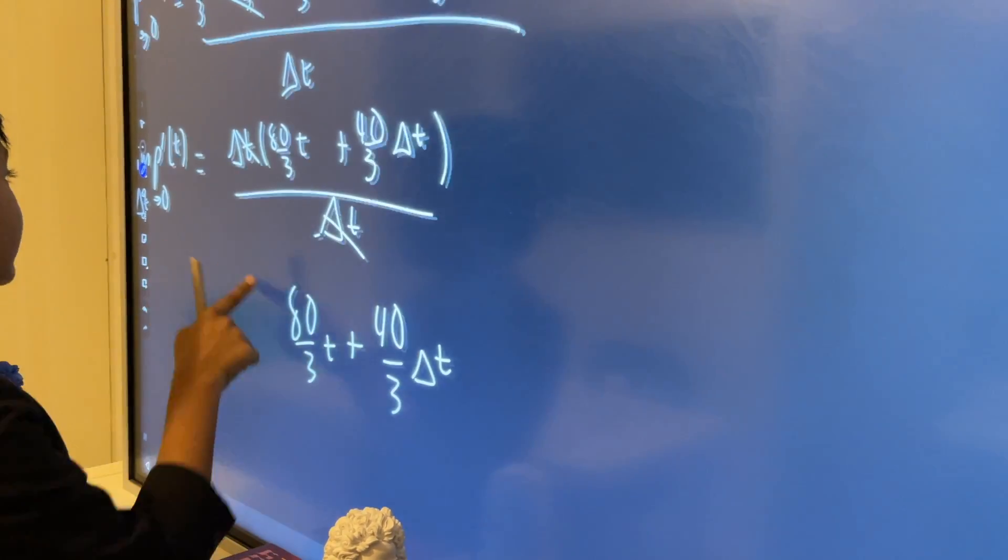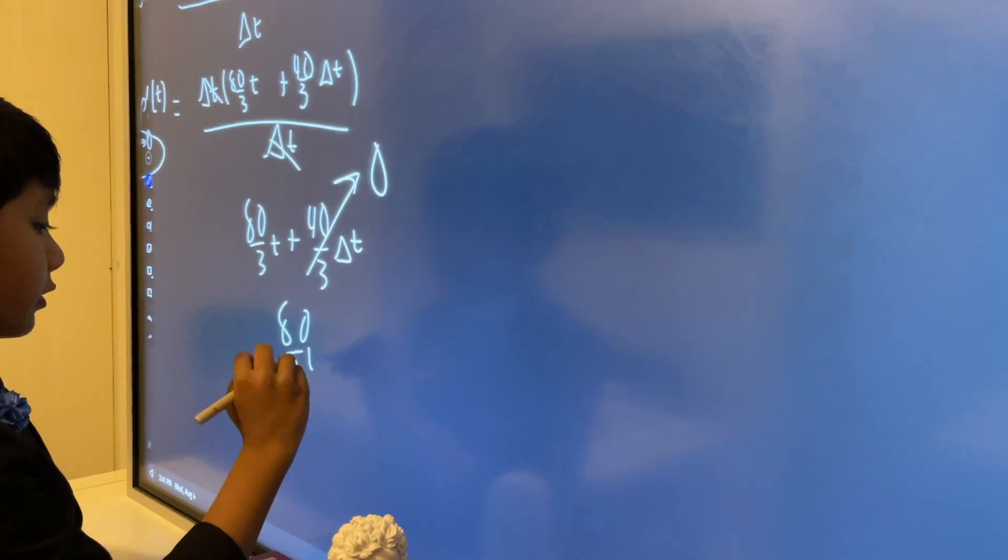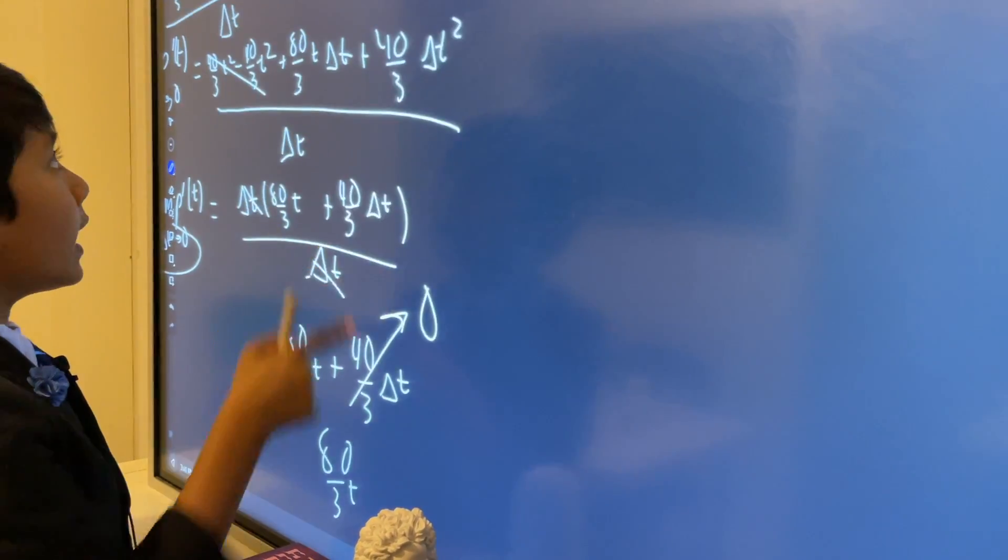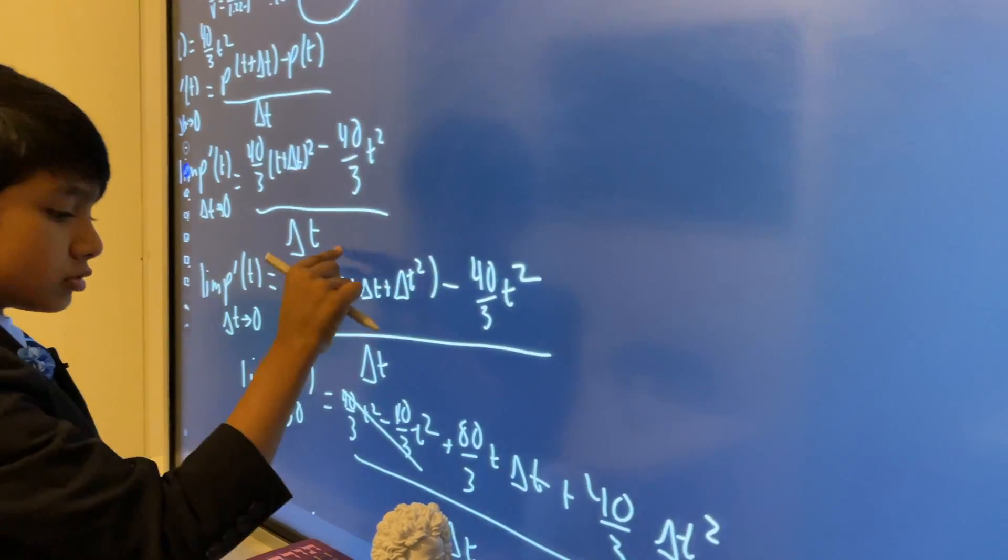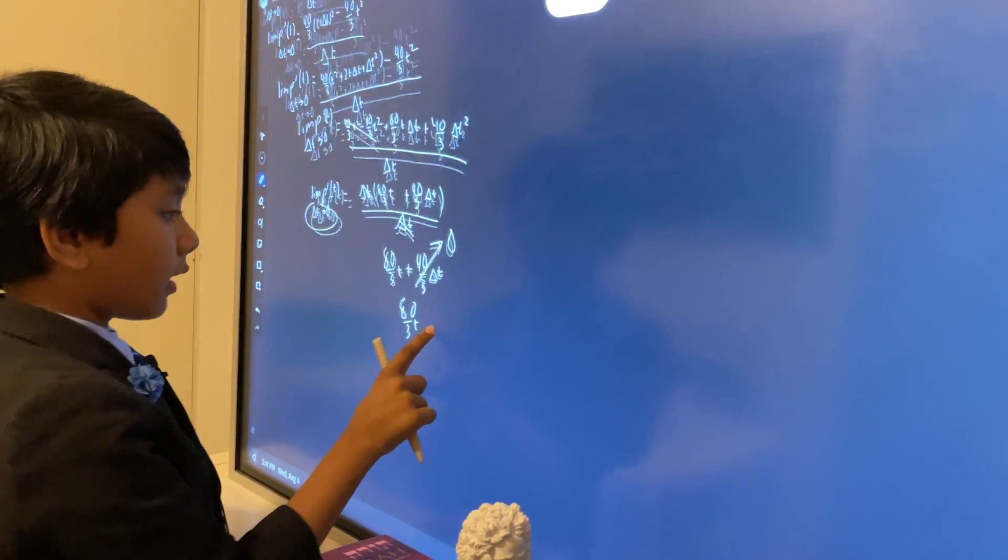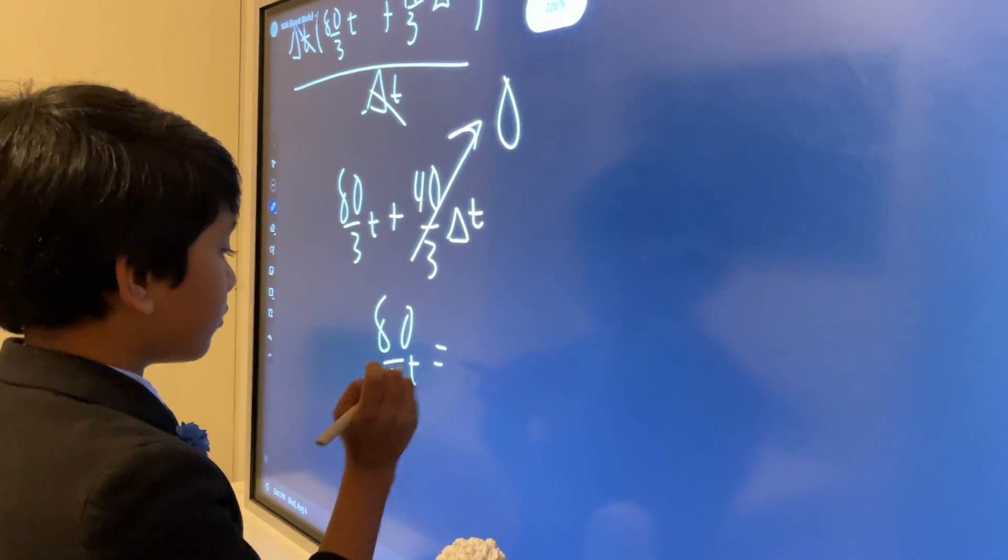But, we said before, delta t must go to 0, thus this entire term goes to 0, and thus the answer is 80 over 3 t. But, what was the time at this exact stop sign? Well, it's 1.22 hours. So, let's zoom out to get a better view.